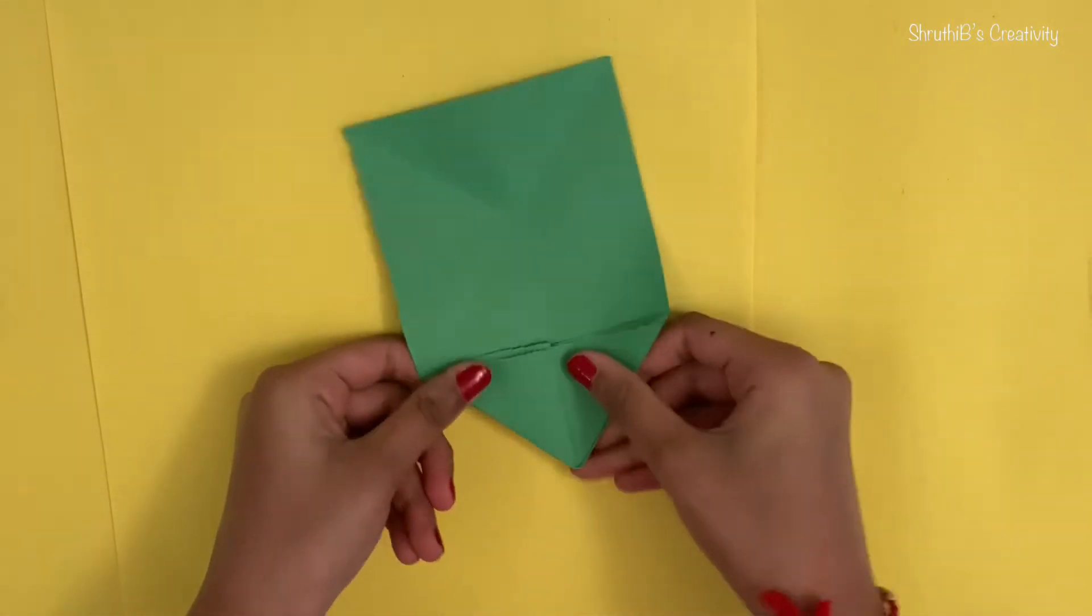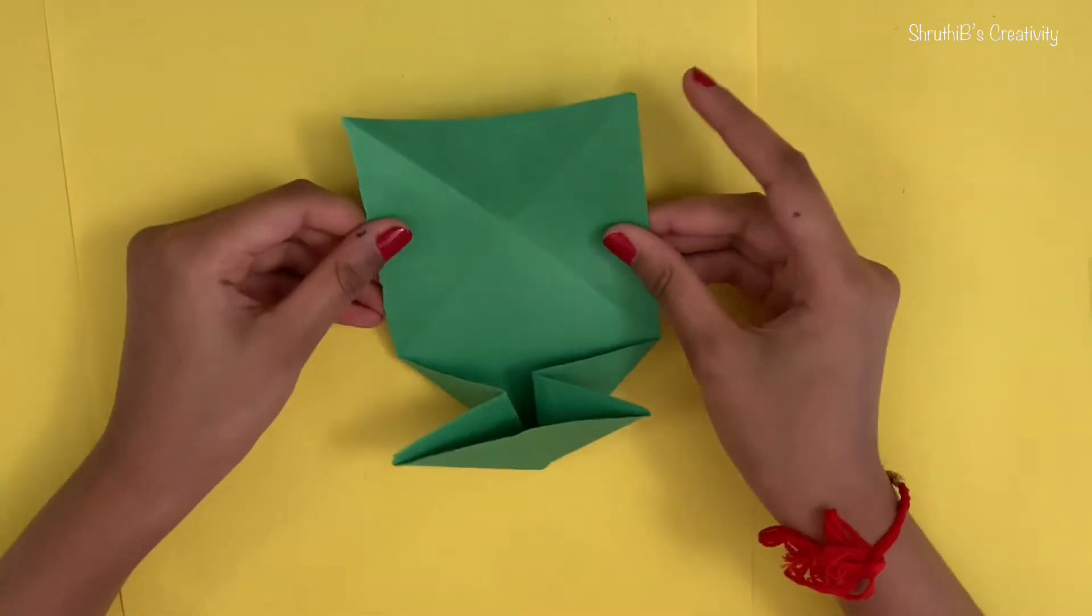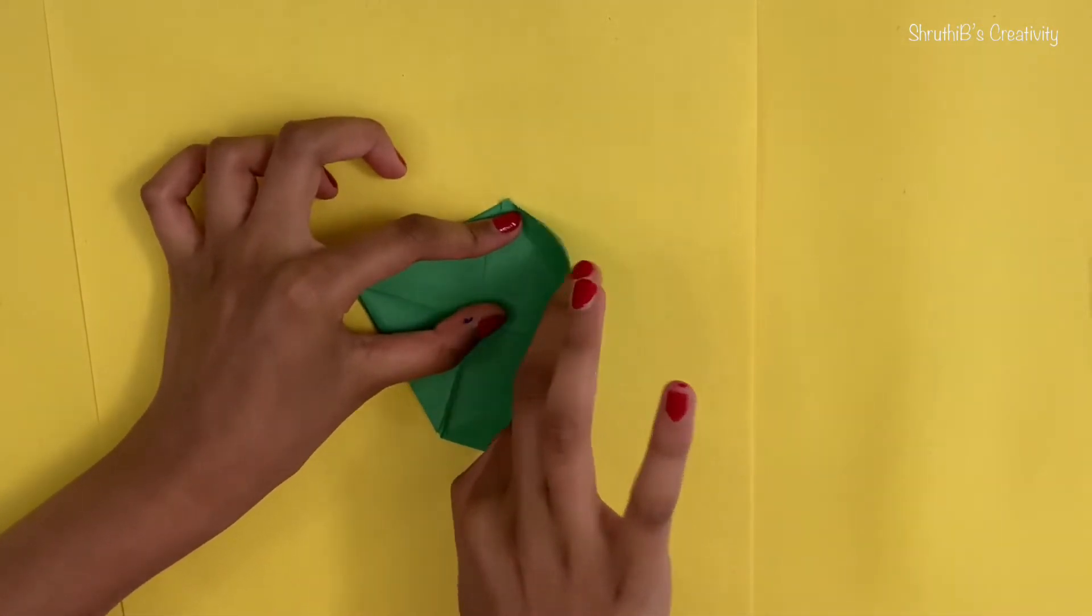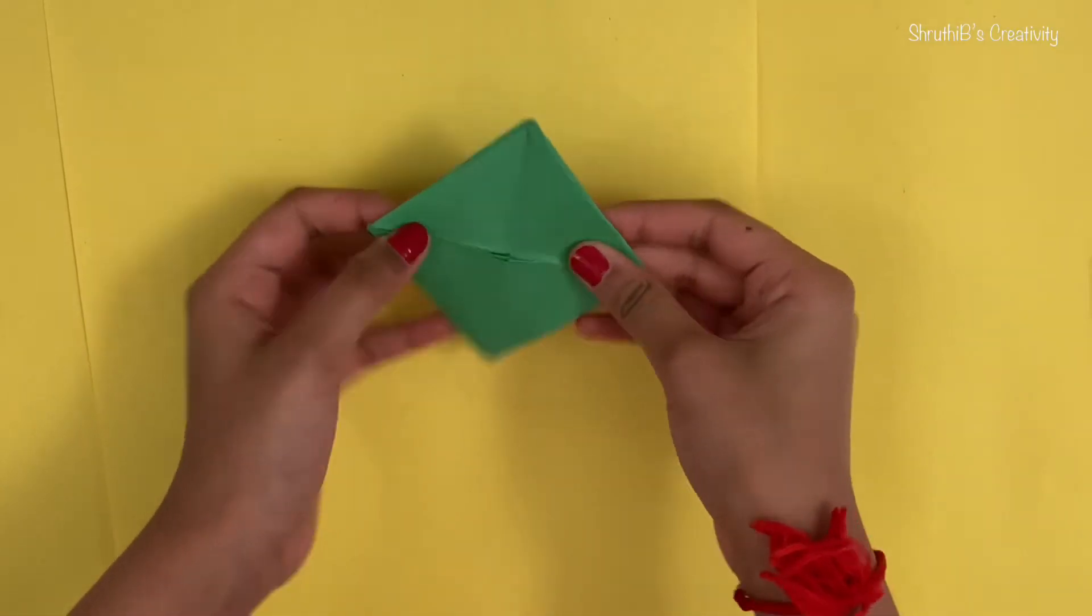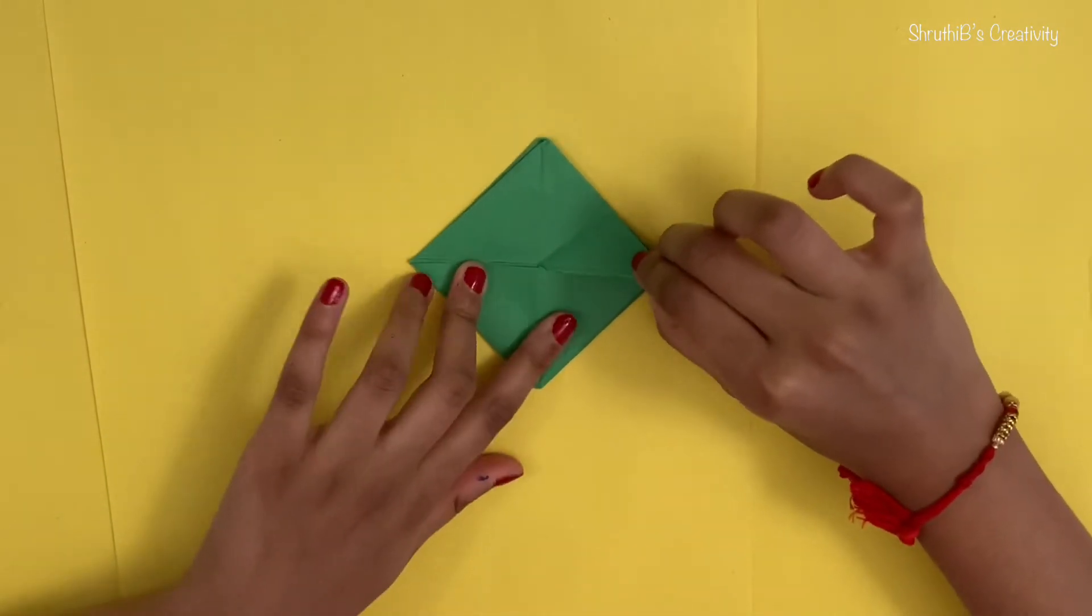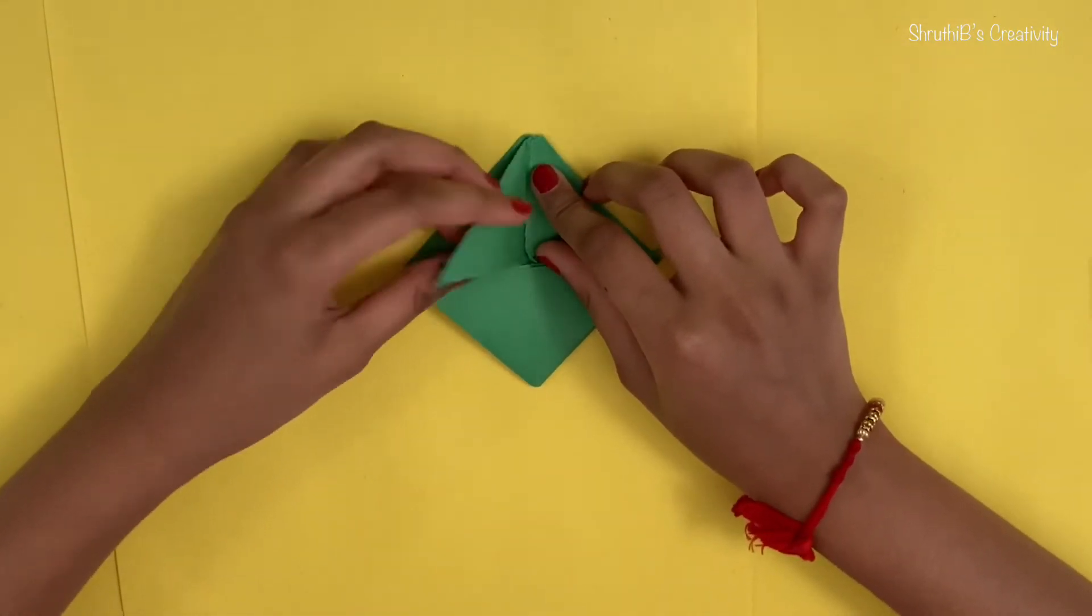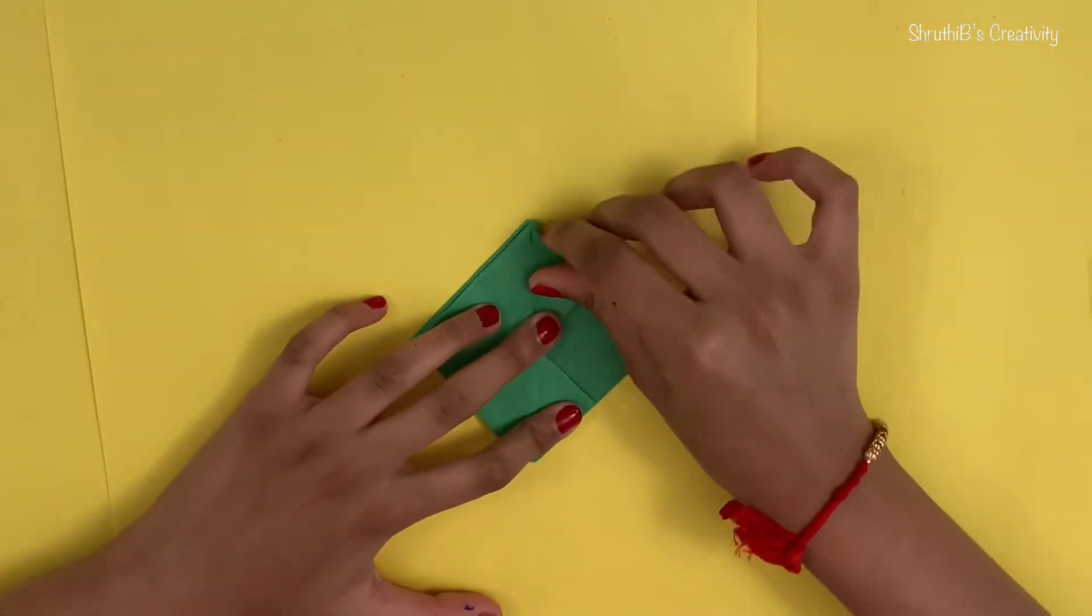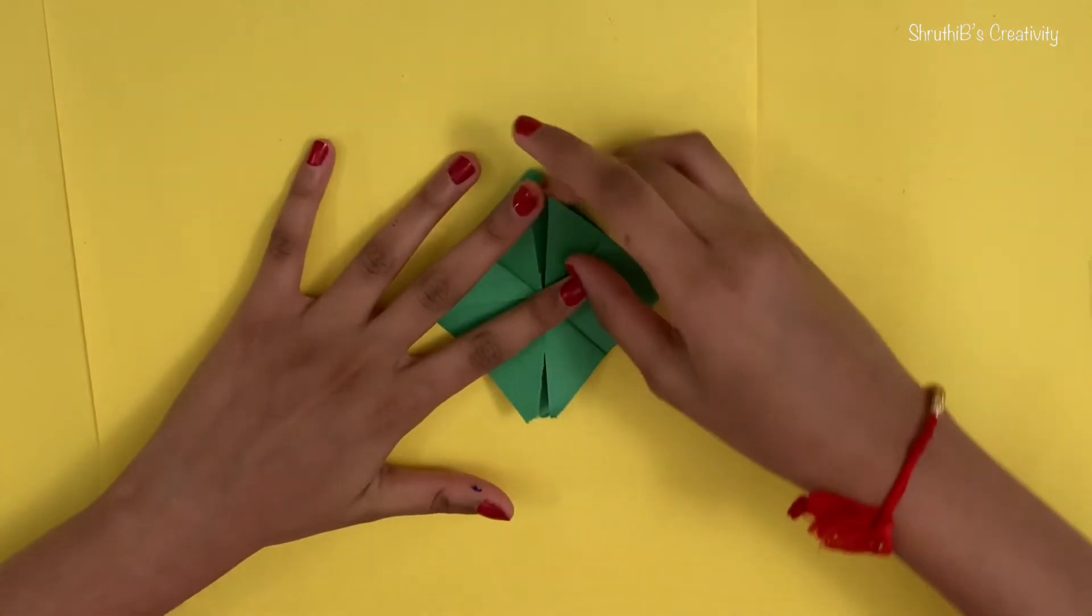Now, you're going to do the same to the other side. You should be having this. And then what you're going to do, take this tip of the corner and you're going to have to fold it upwards like this and do the same to all of them and just like that, but we're not done yet.